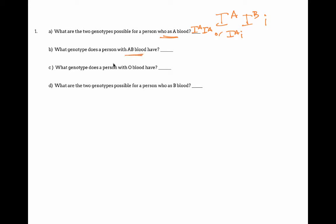If you have type AB blood, your only possibility is I^A I^B. If you're type O, your only possible genotype is little i, little i. And then if you're type B blood, just like type A blood, you could be I^B I^B or I^B i.